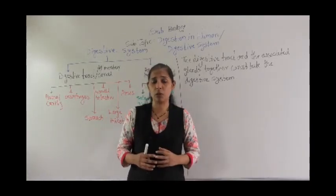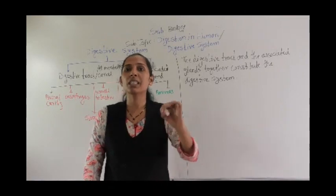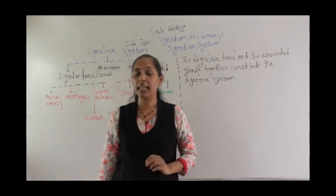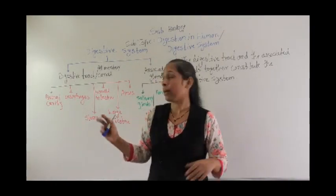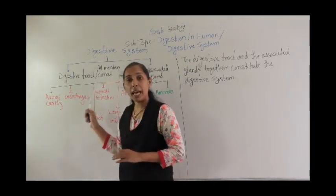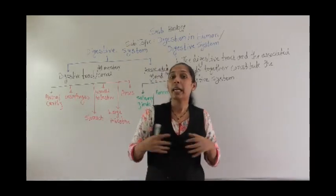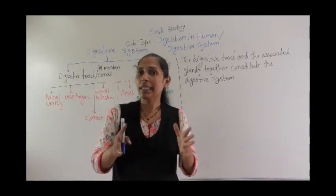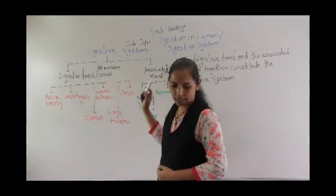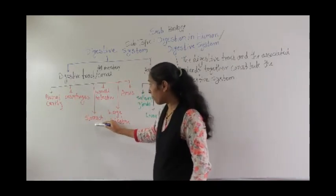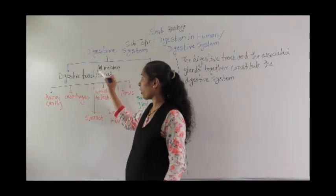All that happens in the alimentary canal, also called the digestive tract. It is a continuous path, but the shape and size of that canal is not the same everywhere — it changes according to the organs. The organs of the digestive tract are: buccal cavity, esophagus, stomach, small intestine, large intestine, and anus. All these are parts of the digestive tract or alimentary canal.